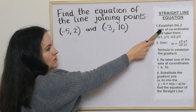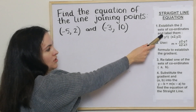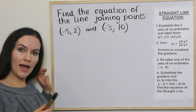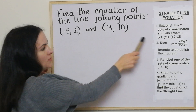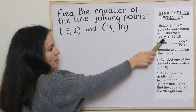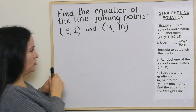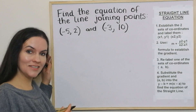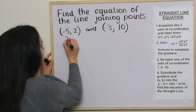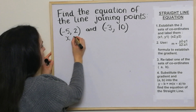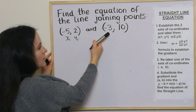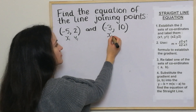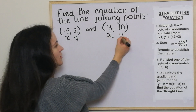The first thing we do is establish the two sets of coordinates. We've got them there and we'll label them x1, y1 and x2, y2. So I'm just going to write it underneath: x1, y1 and x2, y2.